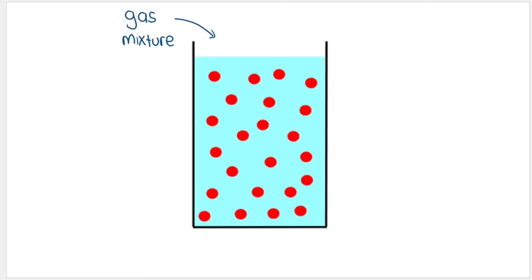The first thing you need to understand is that in, say, a gas mixture — just a whole lot of different gas molecules — all of these molecules are constantly moving around. Gas particles are moving around in all different directions. However, at a specific temperature, say 30 degrees Celsius, the kinetic energy of some of these particles differs from those of other particles.